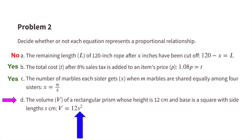Part D: the volume, V, of a rectangular prism whose height is 12 centimeters and whose base is a square with side lengths S centimeters. V equals 12S squared, or V equals 12S to the second power. Since there's an exponent here, it tells me that there will not be a proportional relationship.